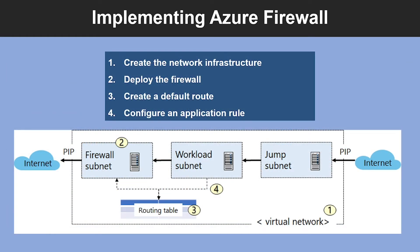So how can you implement an Azure Firewall? Let's consider a simple example where we want to use Azure Firewall to protect our workload server by controlling the network traffic. The first step is to create the virtual infrastructure. In this case, we have one virtual network and three subnets. The second step is to deploy the firewall, which is associated with the virtual network in a separate subnet with public and private IP addresses.